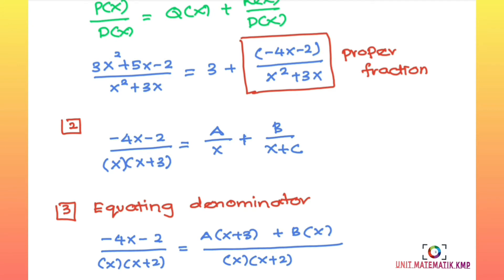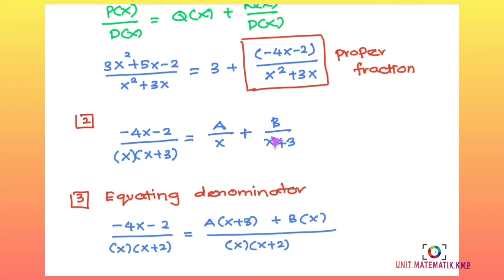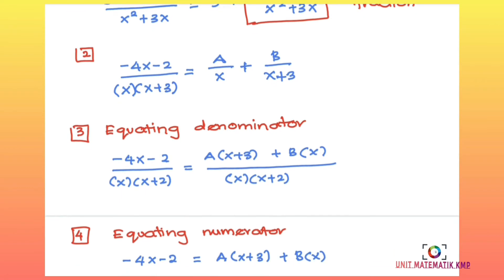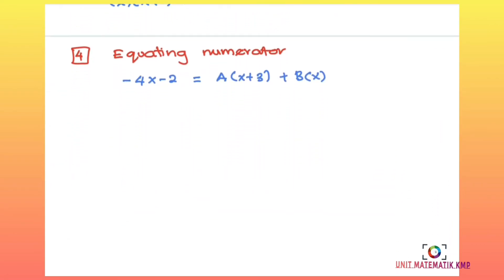Next, we equate the denominators using the same method as learned before. A already has x but not (x + 3), so A must multiply by (x + 3). B must multiply by x because it only has (x + 3). After equating denominators, we equate the numerators.